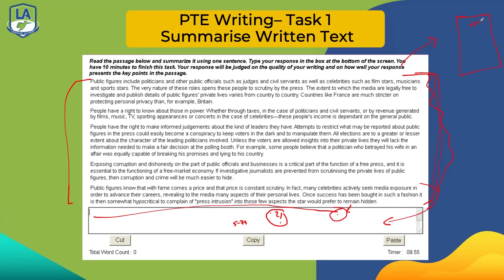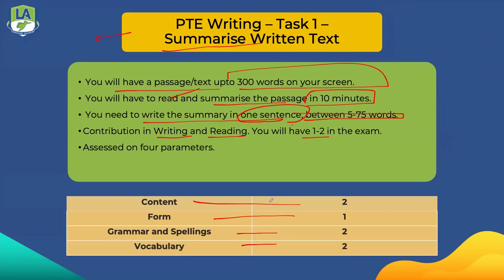Since 100 students writing a correct answer will all have different answers, the computer checks content on the basis of keywords. Even though all 100 students have a perfect answer, they will share similar keywords from the text. Keywords are important topic words — words repeated again and again, nouns, proper nouns starting with capital letters like politicians, judges, film stars, musicians. To get full points — two out of two in content — you need to include five to seven keywords from the passage in your answer.